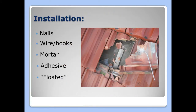There are many ways to install tile. Tile can be installed with nails, wire, hooks, mortar, or adhesive. It also can be installed with no securement whatsoever on certain roof types. Typically a heavier tile on a lower slope roof would be allowed to just float the tiles in place.